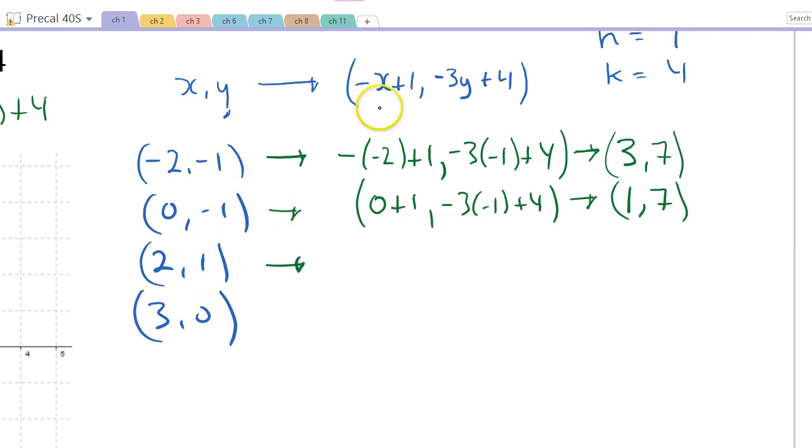Okay, so my (2, 1), I'll get -2 + 1, comma. So now looking at my y value, -3 times positive 1 plus 4, and that will give me, -2 + 1 is -1, comma, -3 + 4 is positive 1.